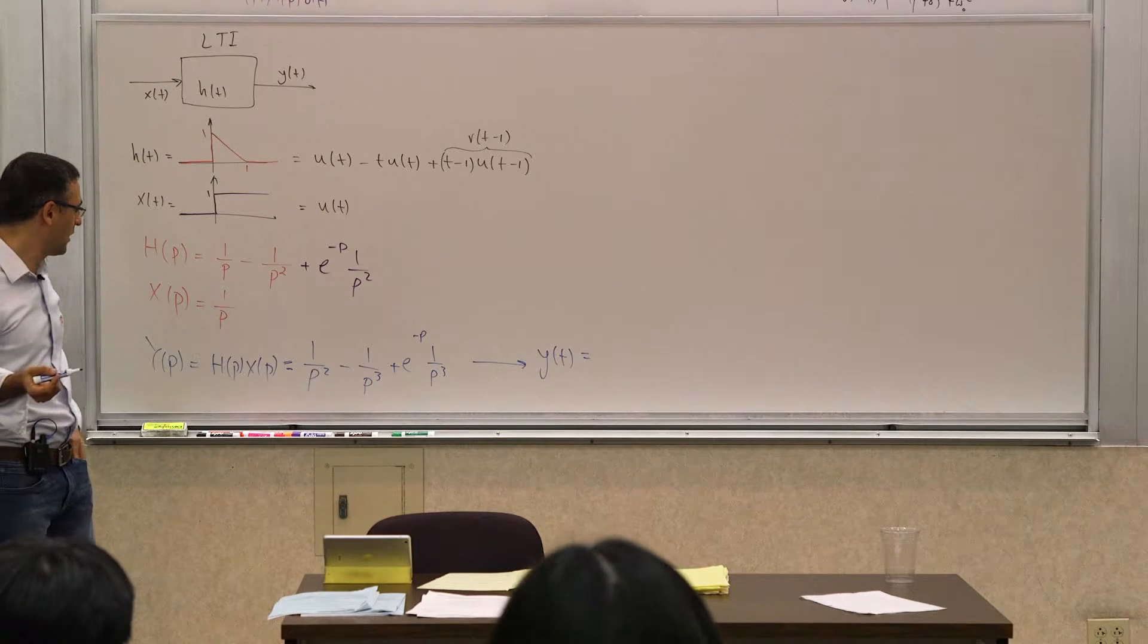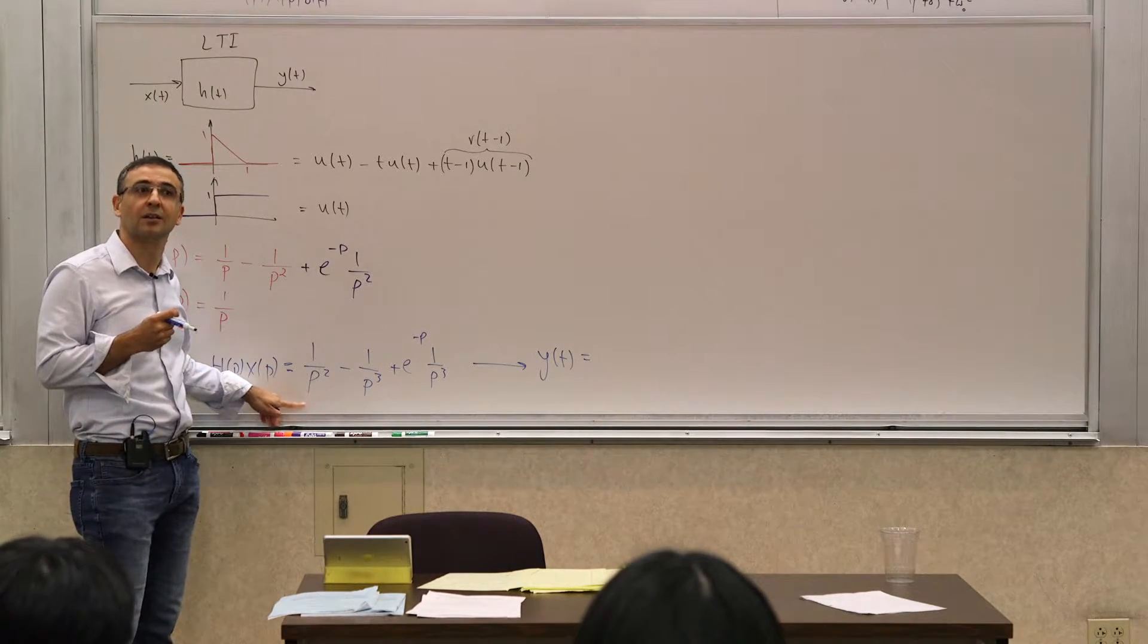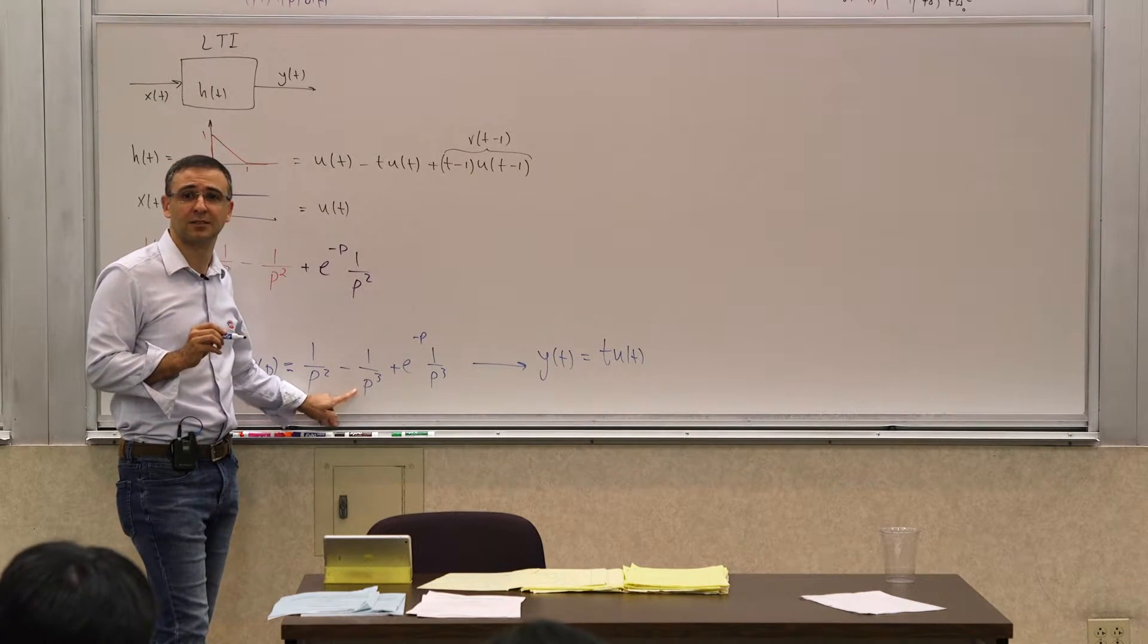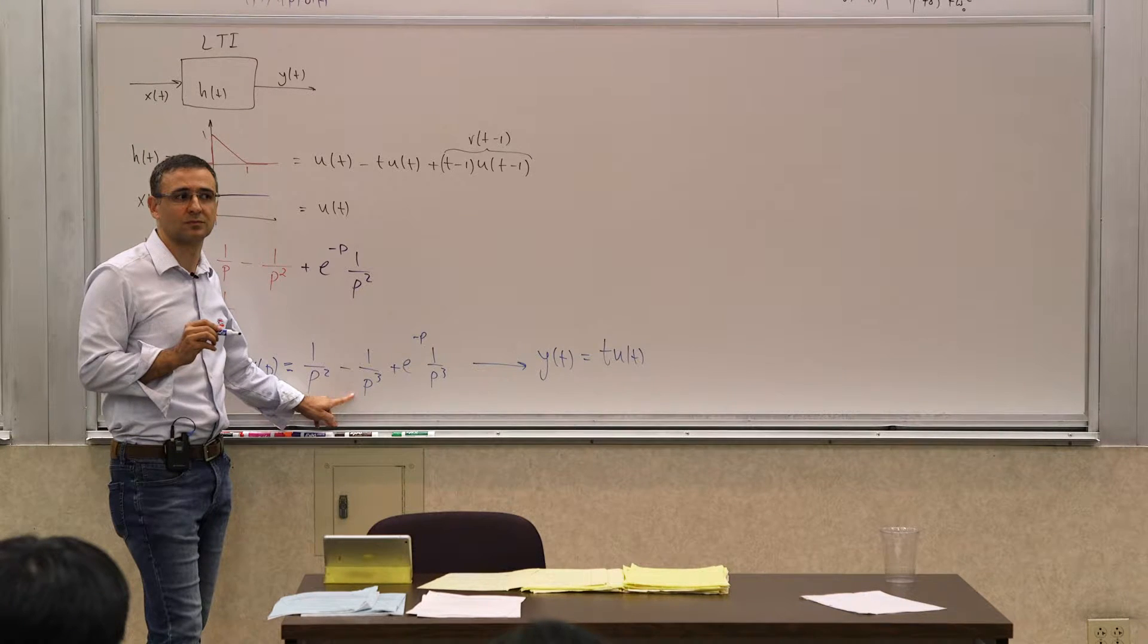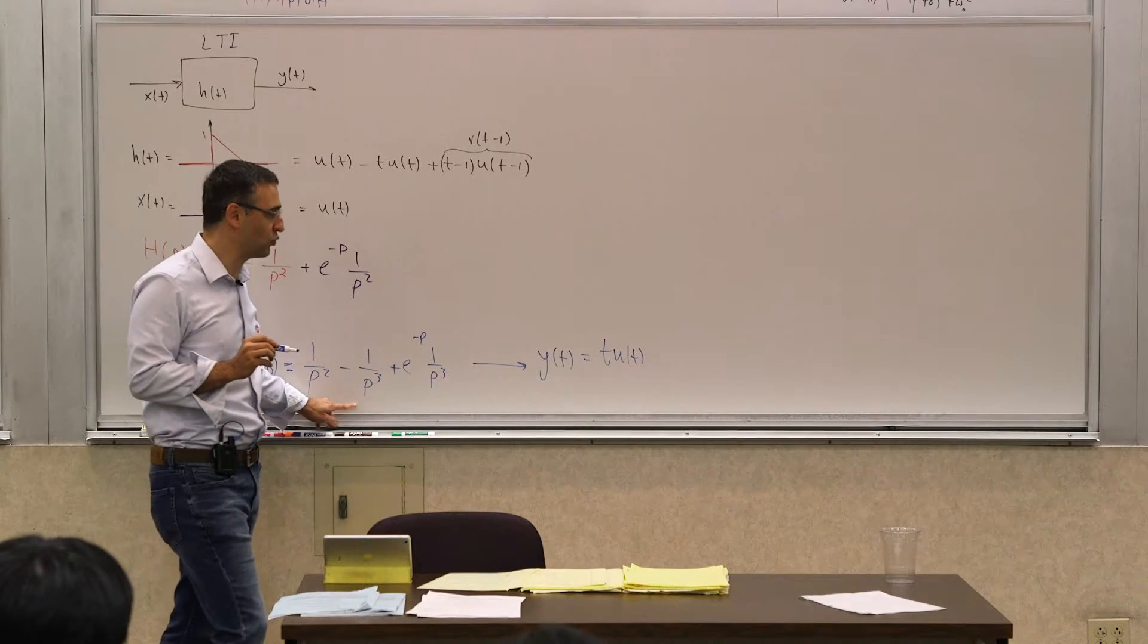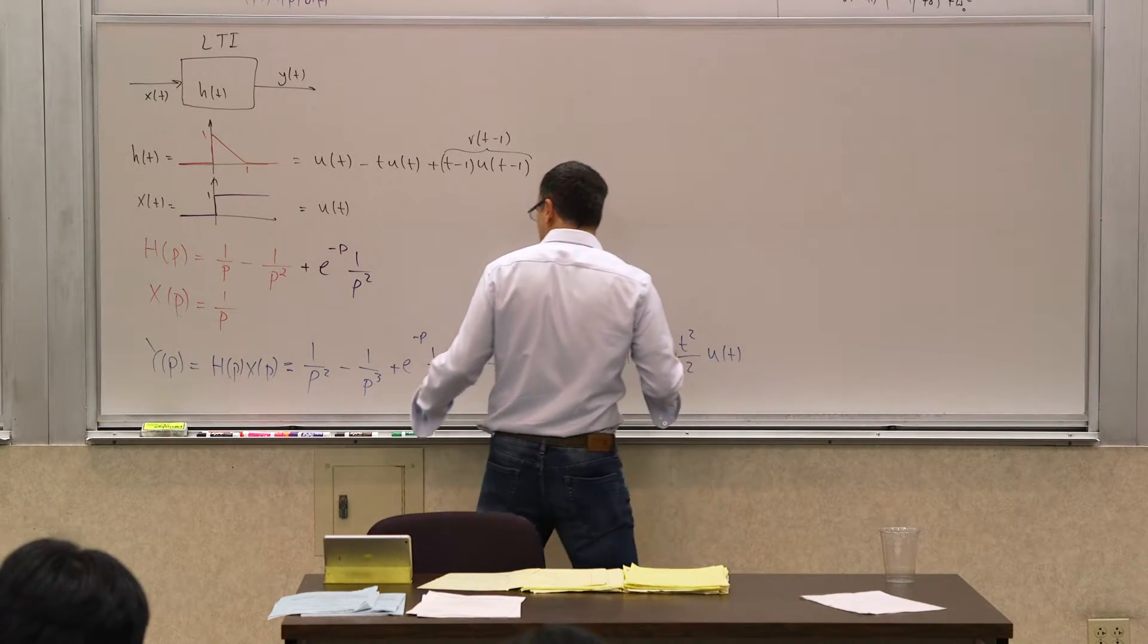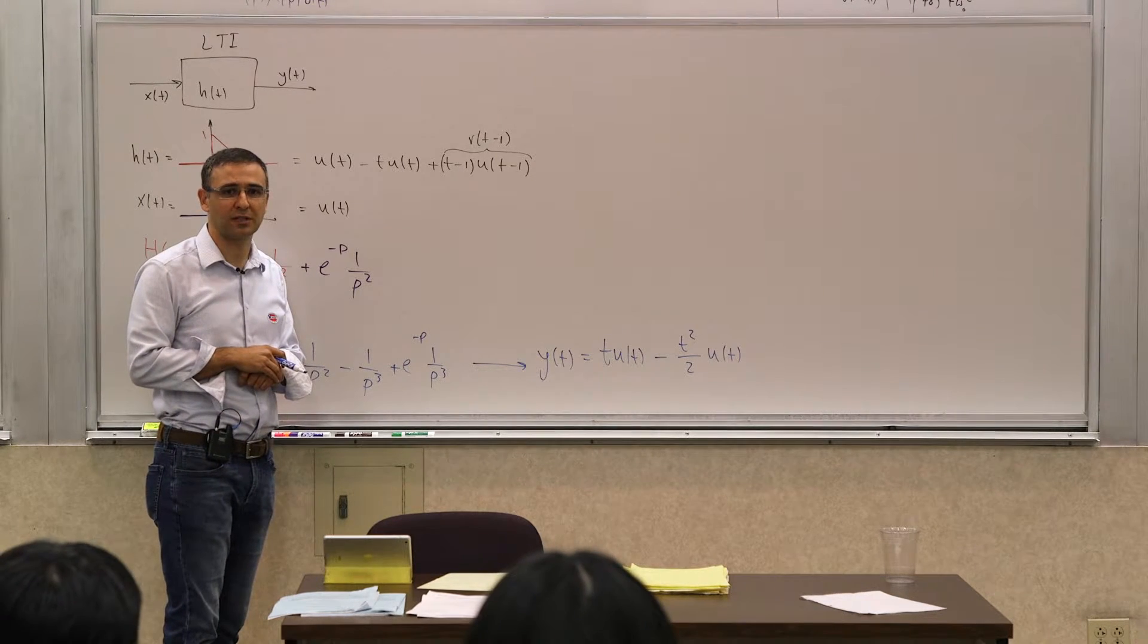And then I have to convert that back to a y of t. Again, I use the catalog. What is the catalog entry for this one, p squared? r of t, or t u of t. What is the catalog entry for this one? t squared over 2, exactly. And what is the catalog entry for this? Now with the delay, with our knowledge of the delay, how it's treated.